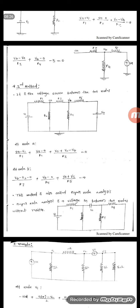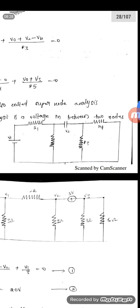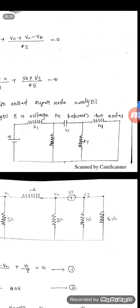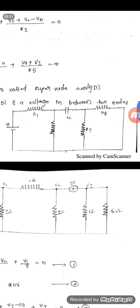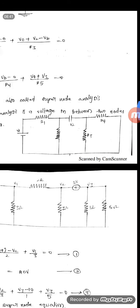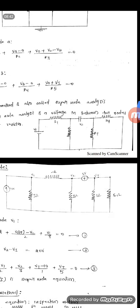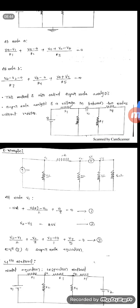Without a resistor. This is the third case. In between VA and VB, there is no resistor — only a voltage source is present. If a voltage source is between two nodes with no resistor, then it is called a super node.